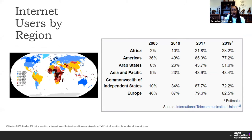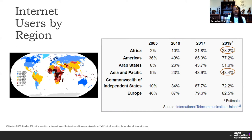Looking at continents — Africa, the Americas, Arab states, Asia, the Commonwealth, and Europe — the numbers are very disconcerting. Africa, with about 1.3 billion people, has only 28.2 percent internet access, meaning the continent is largely being left in the dark. Opportunities are being afforded disproportionately to already high-income countries and continents. Asia, with billions of people, also shows very low numbers, with some countries even more disparately treated.